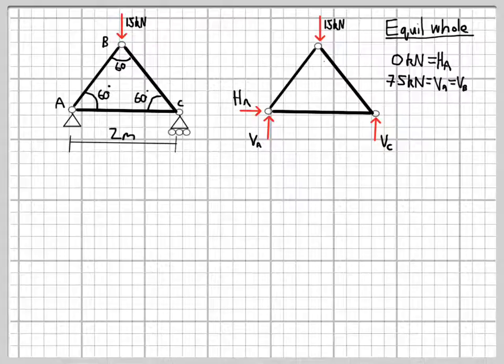On the second line there, we can see that the structure and both the loads are now symmetrical, and so both VA and VC will be 7.5 kN acting upwards. We could, of course, take moments about either A or C to get the same result there.